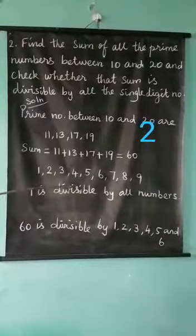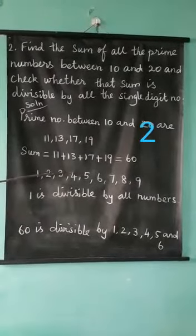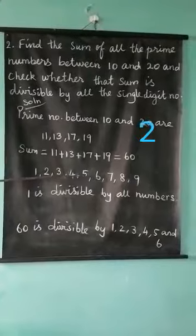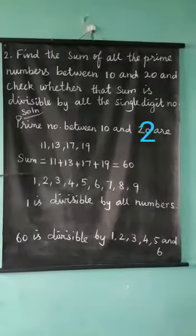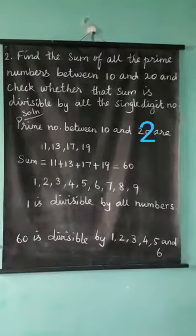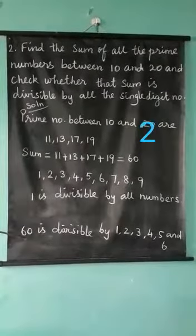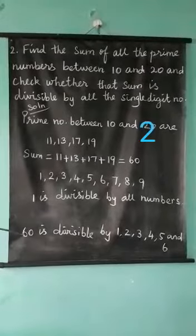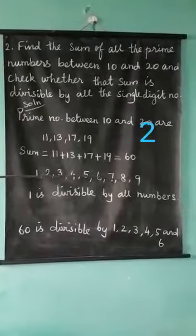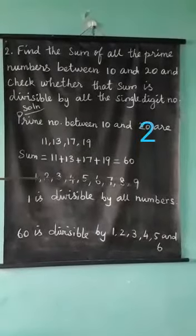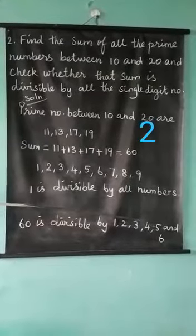Then, 60 is divisible by: 2, because 60 is an even number; 3 also divides 60; 4 also divides 60 — the answer is 15; and 5 divides 60; and 6 divides 60. However, 7, 8, and 9 do not divide 60. So, 60 is divisible by 1, 2, 3, 4, 5, and 6. Understood, students?